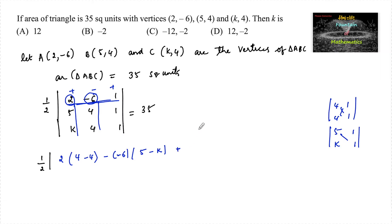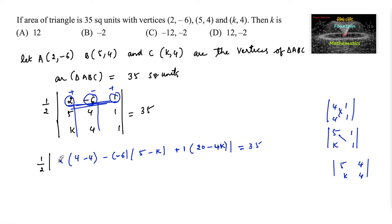Plus 1 times deleting this row and column, so we have determinant 5, 4, k, 4. So we have 5 times 4 is 20 minus 4 into k is 4k, equals 35.